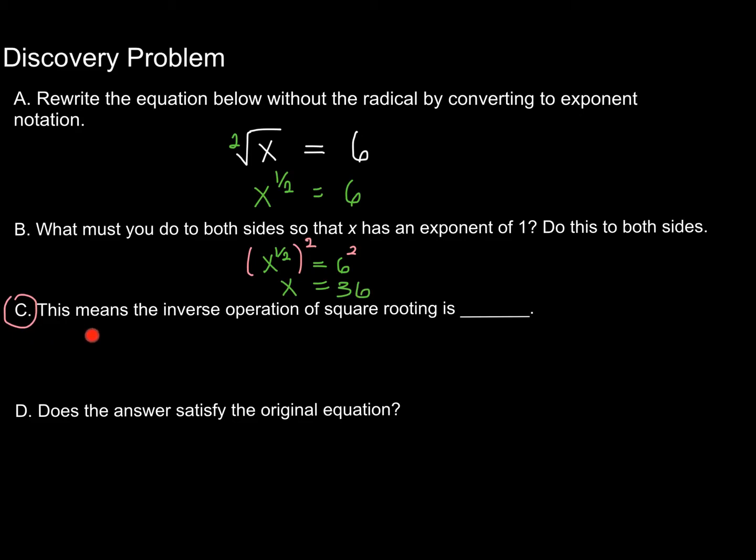Alright, so what does this mean, the inverse operation of square rooting is? Well, notice that we were square rooting x, and then to undo that operation, in other words for us to be left with x, we had to square both sides. And you can see that very clearly, squaring undoes the raising of x to the 1 half power, because we multiplied the two exponents there, and so we're left with an exponent of 1. So this means the inverse operation of square rooting is squaring.